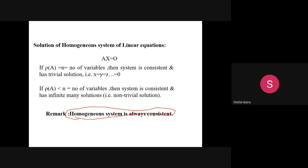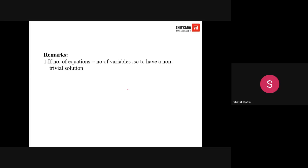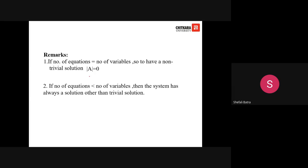For non-homogeneous systems, we check consistency by comparing the rank of the augmented matrix with the rank of the coefficient matrix. If they are equal, the system is consistent; if unequal, it is inconsistent. For homogeneous systems, which are always consistent, if the number of equations equals the number of variables, the determinant must be zero for a non-trivial solution. If the number of equations is less than the number of variables, the system always has a non-trivial solution.